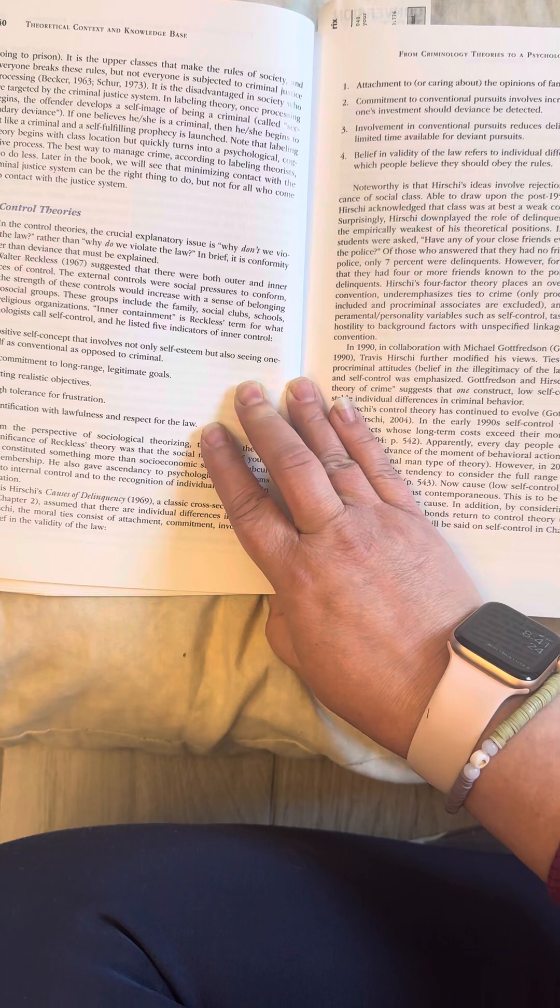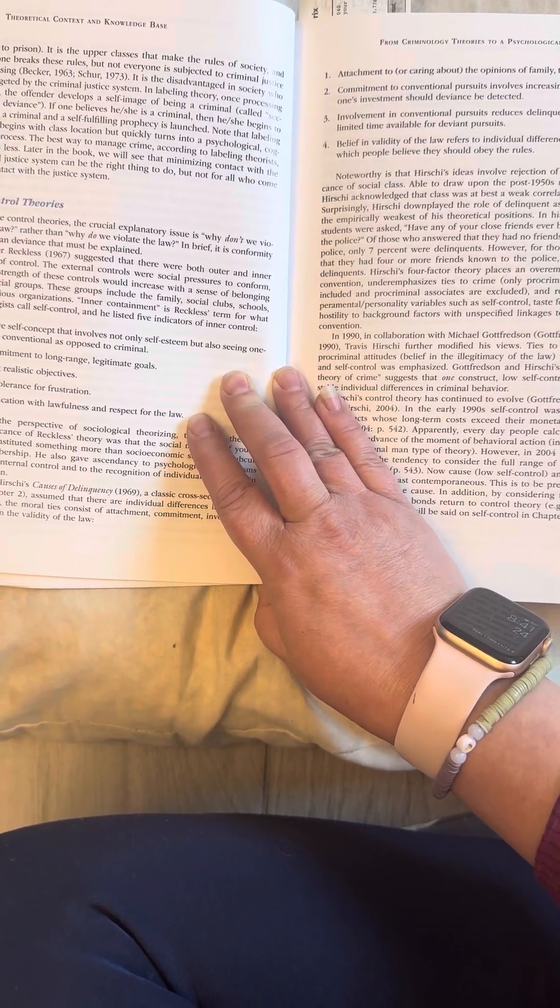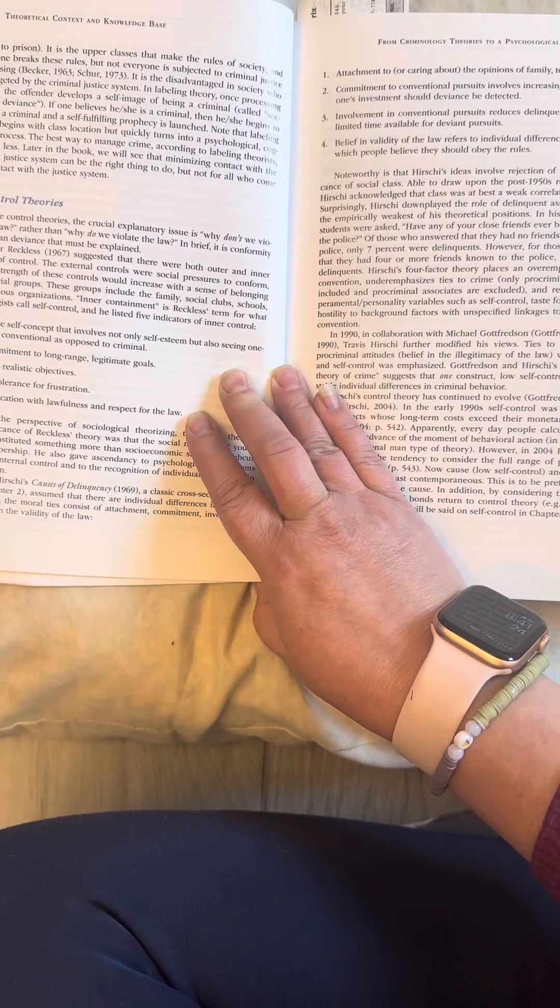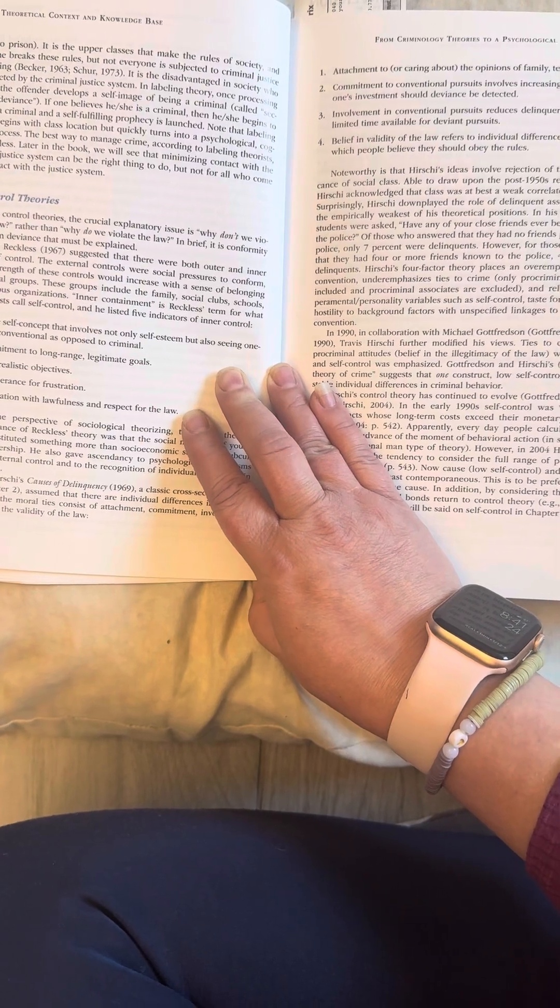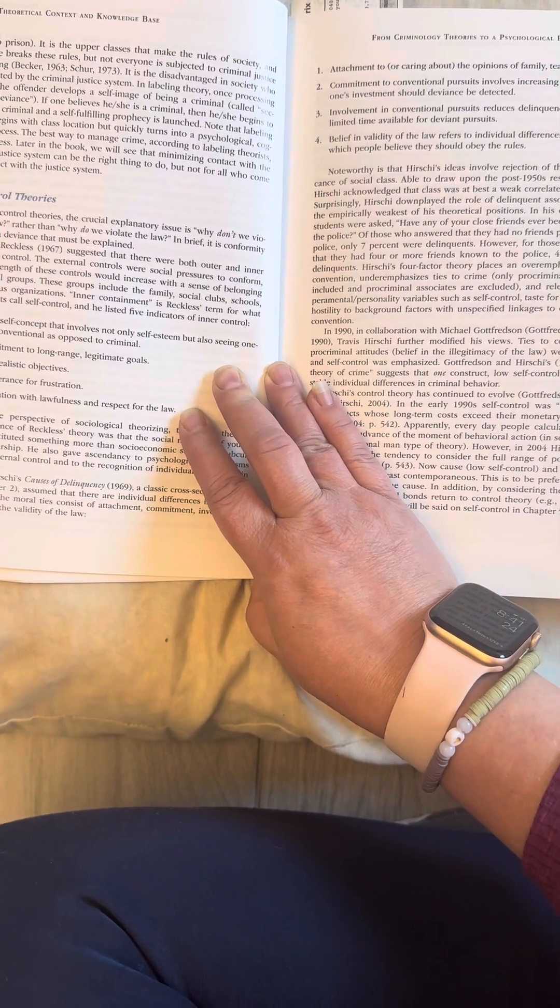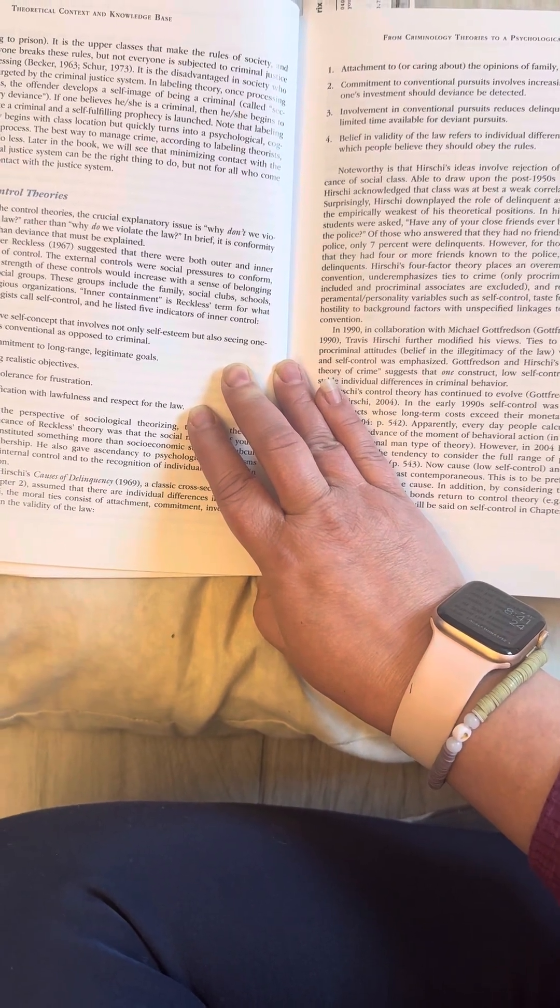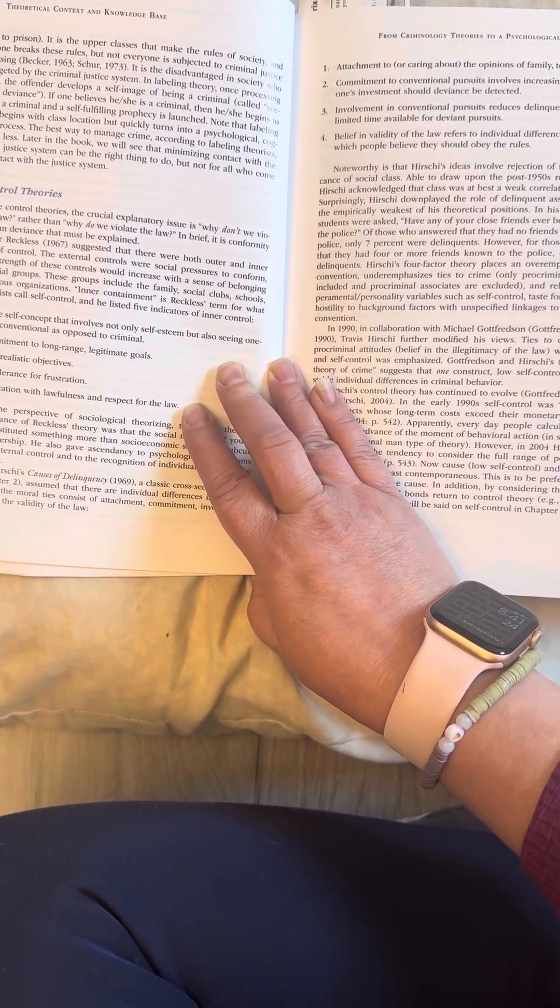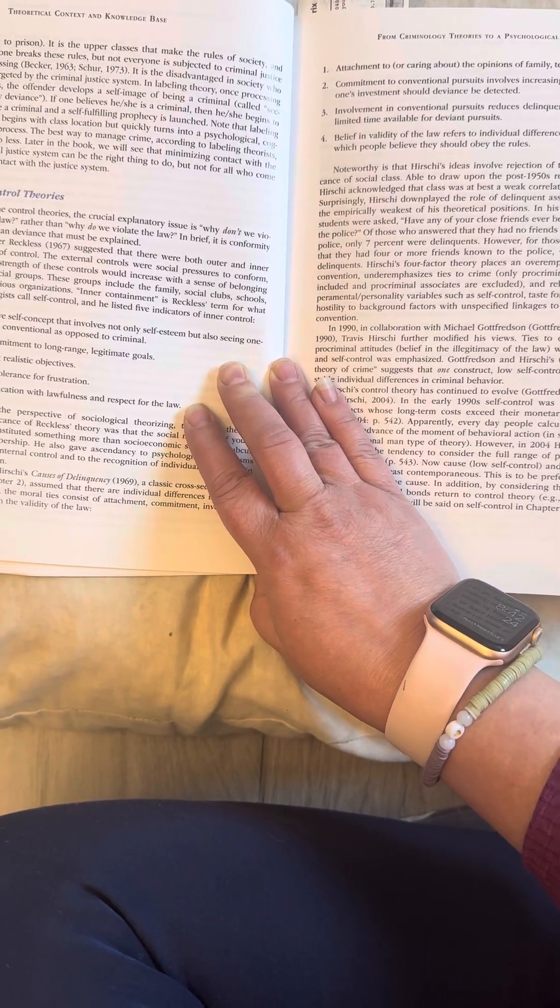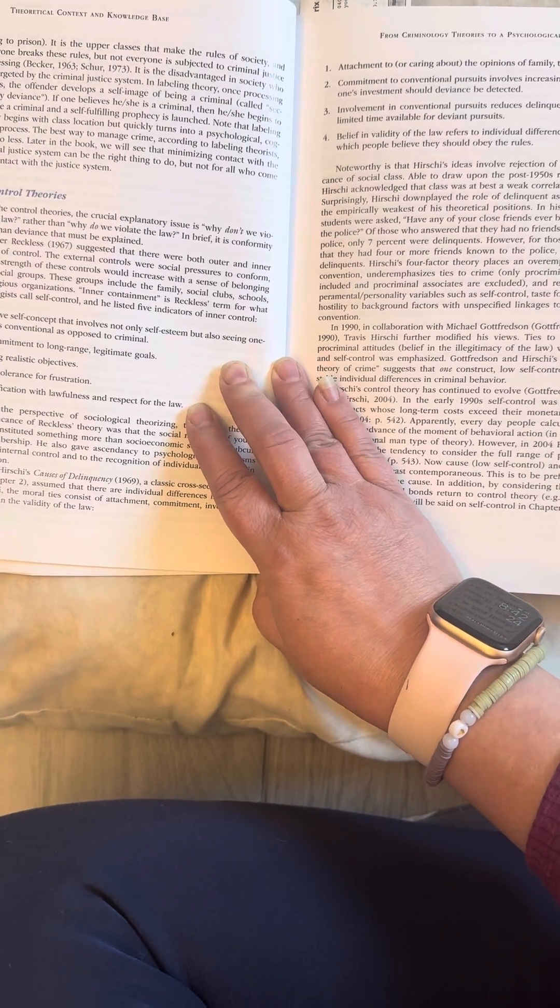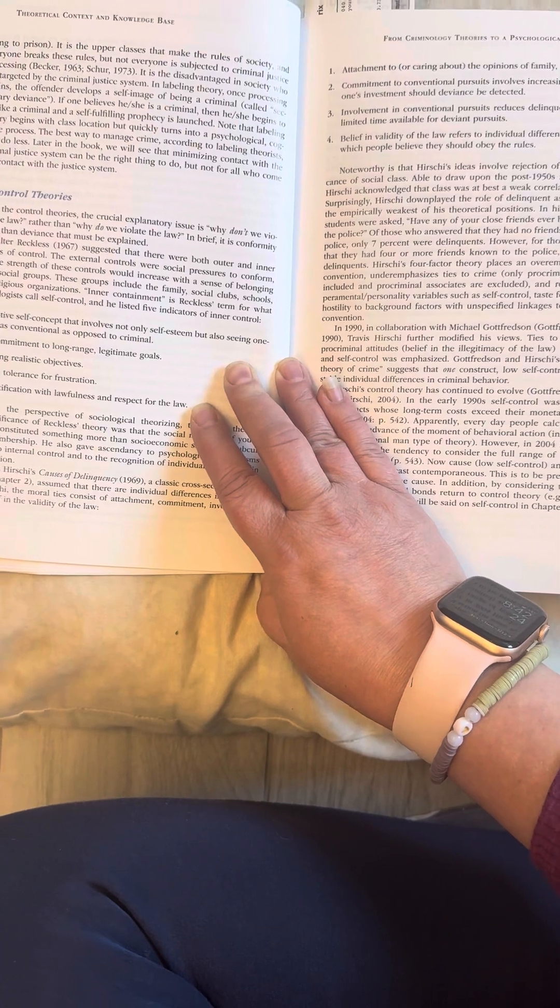Becker, 1963, Schur, 1973. It is the disadvantaged in society who are targeted by the criminal justice system. In labeling theory once processing begins, the offender develops a self-image of being a criminal called secondary deviance. If one believes he or she is a criminal, then he or she begins to act like a criminal, and a self-fulfilling prophecy is launched. Note that labeling theory begins with class location, but quickly turns into psychological, cognitive processes.